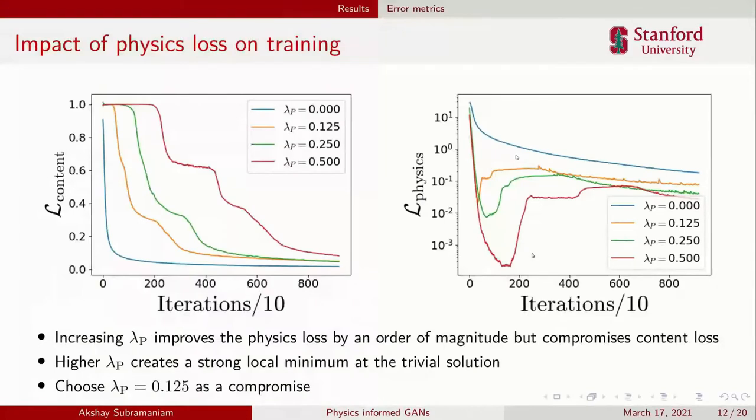Here are a few loss plots for different values of lambda p, which is the weighting for the physics losses. Going from zero, which is no physics loss, to 0.5, which is high weighting for physics losses, you can see that the physics losses drop by more than an order of magnitude, which means the generated data is satisfying physics much better.